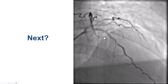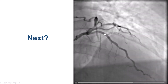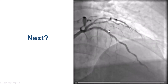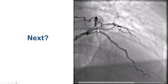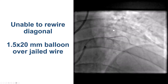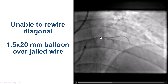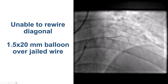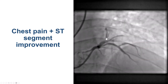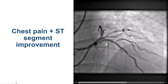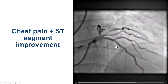Unfortunately, instead of having improved flow in the diagonal, we actually lost flow in the diagonal. The patient did have some chest discomfort and ST segment changes, so clearly this was an important branch. The next step is to try to rewire the diagonal branch and perform balloon dilatation, but we were unable to advance a guidewire. We ended up using a small 1.5 millimeter balloon over the jailed wire, ballooning in the diagonal, and after doing that we restored good TIMI 3 antegrade flow, and the EKG changes and chest discomfort both resolved.